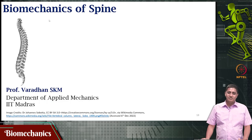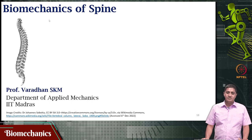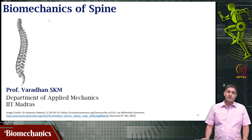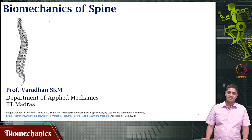Welcome to this video on biomechanics. We have been looking at the spine, how the vertebral column is organized and how it plays its important role of supporting the head and allowing for articulation in various directions. We also saw the muscles that support movements from the level of the neck to the level of the spine and the various sub-muscles of the broad group called erector spinae. This is what we saw in the previous videos.